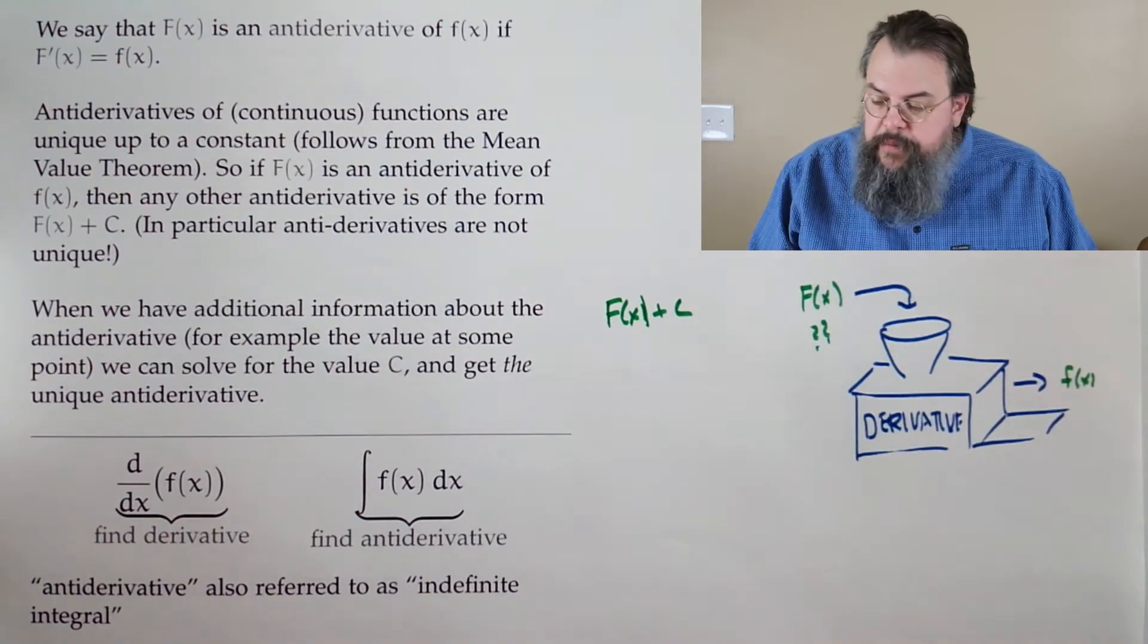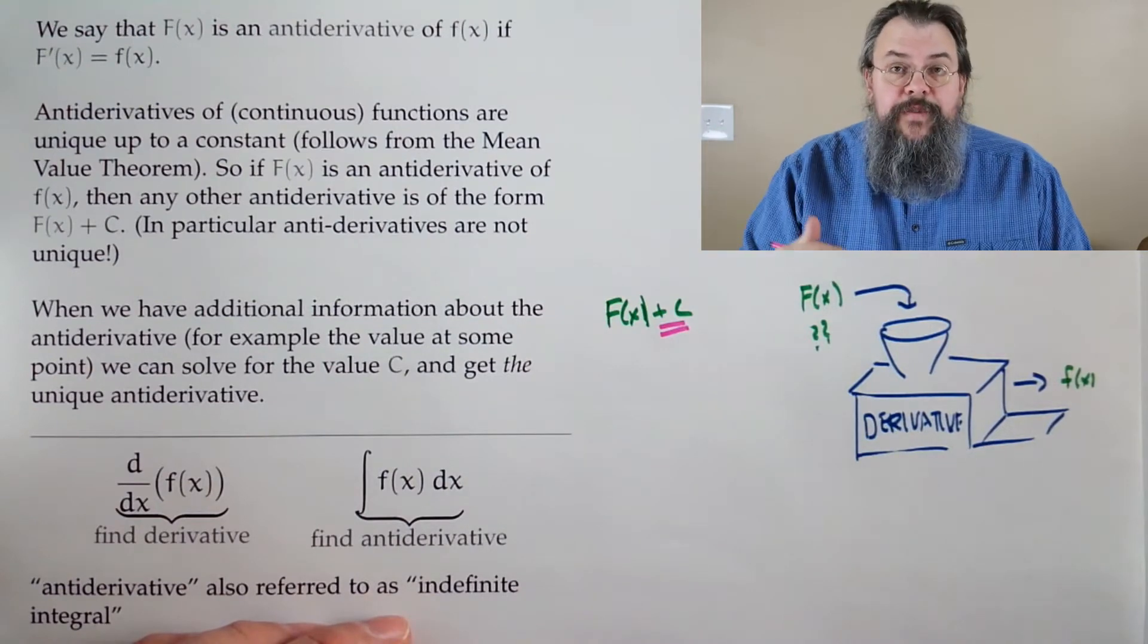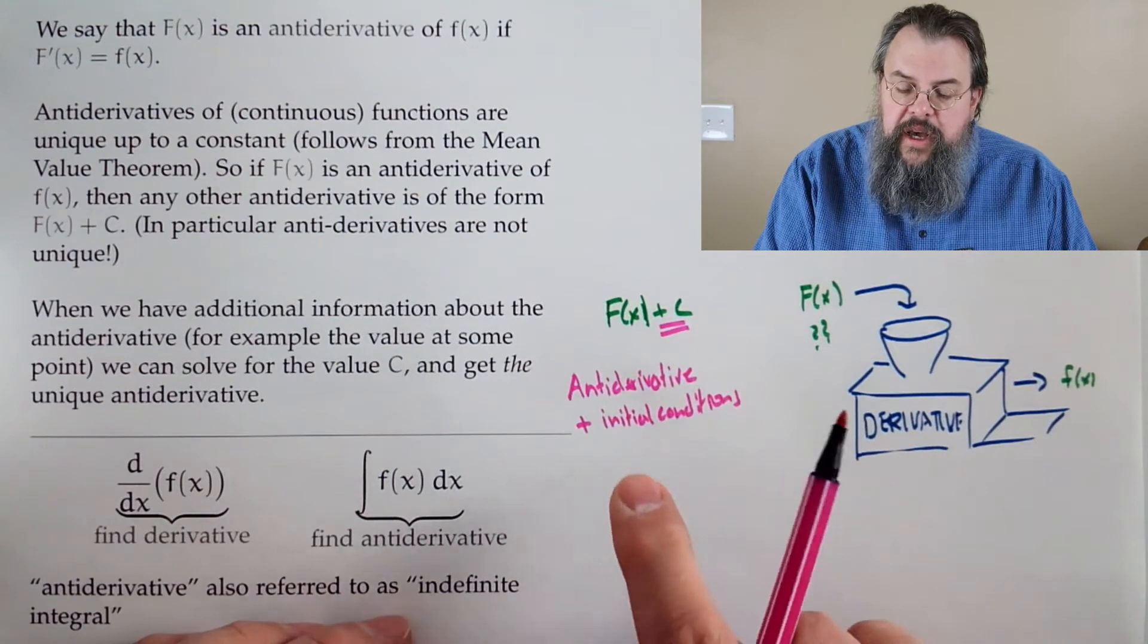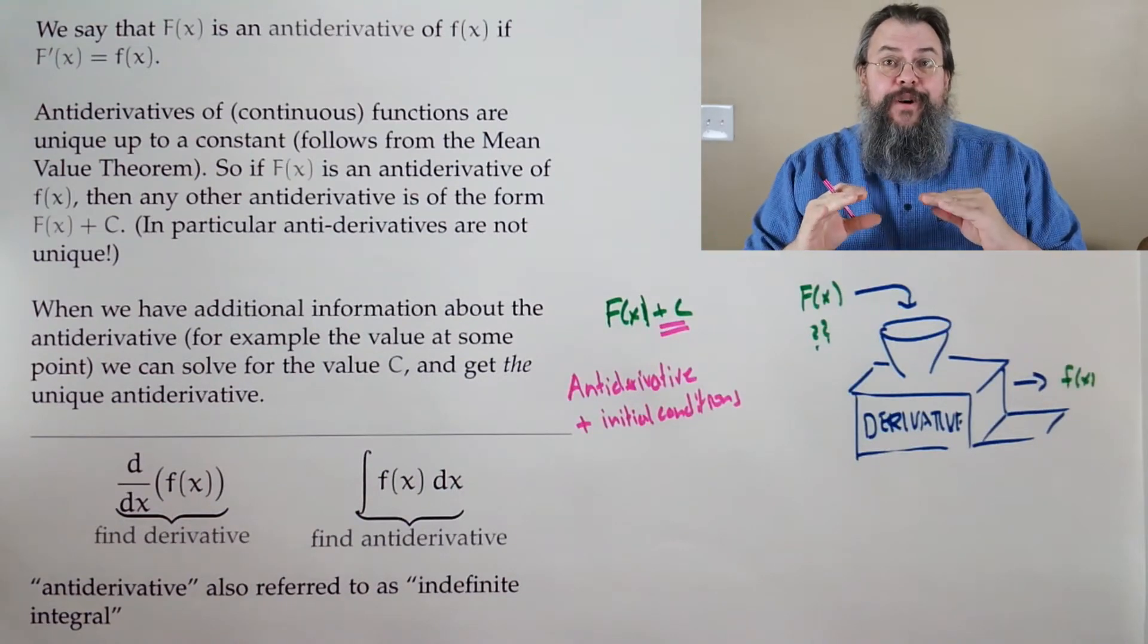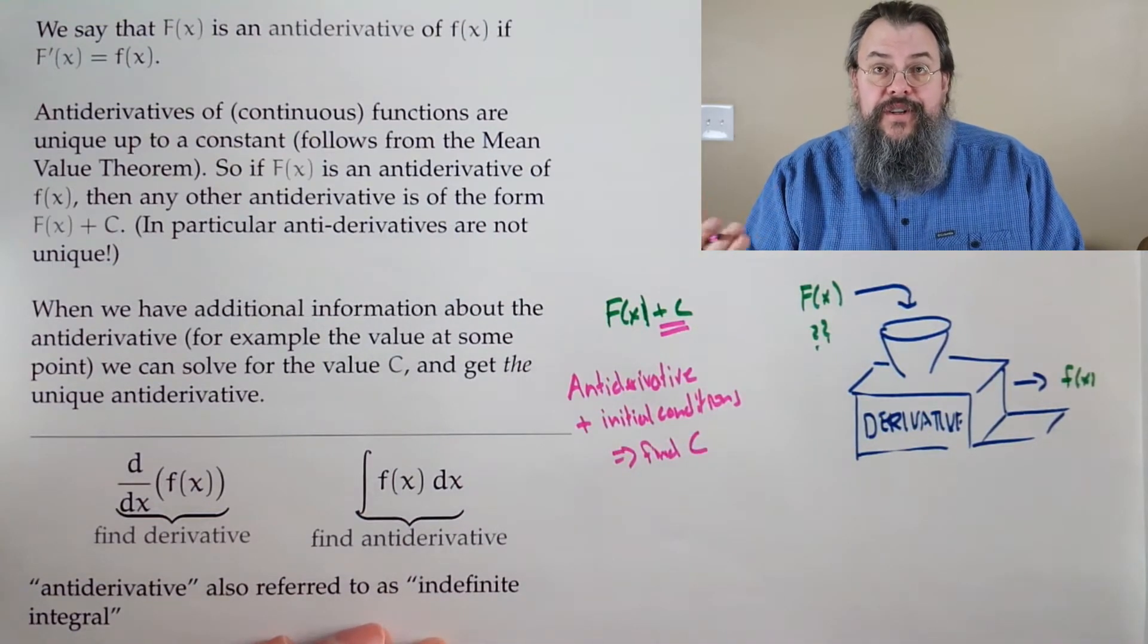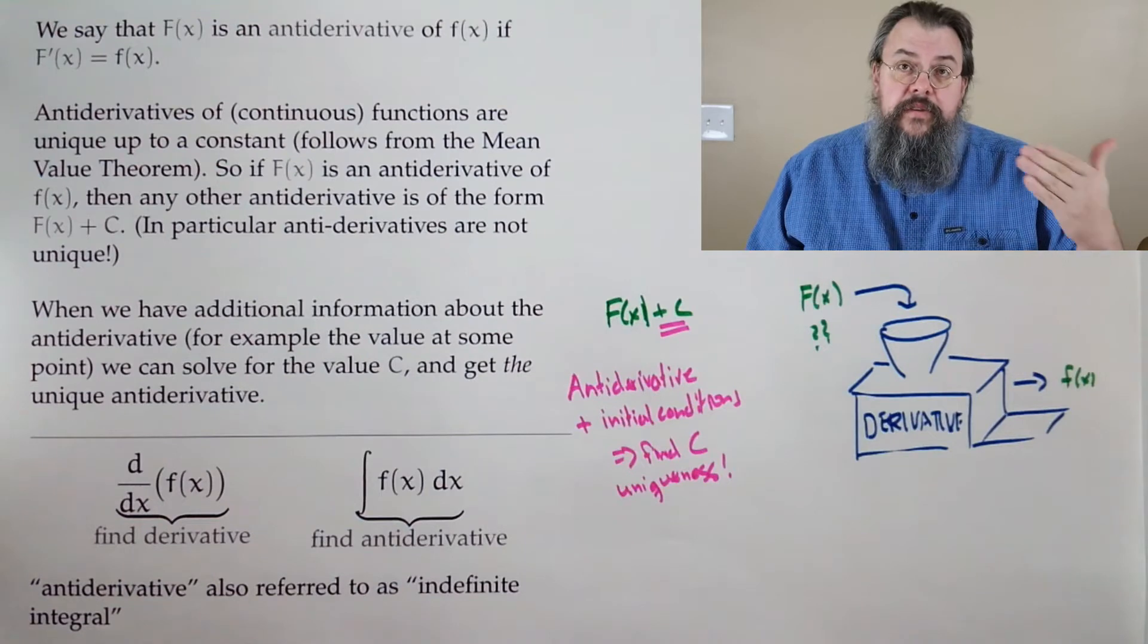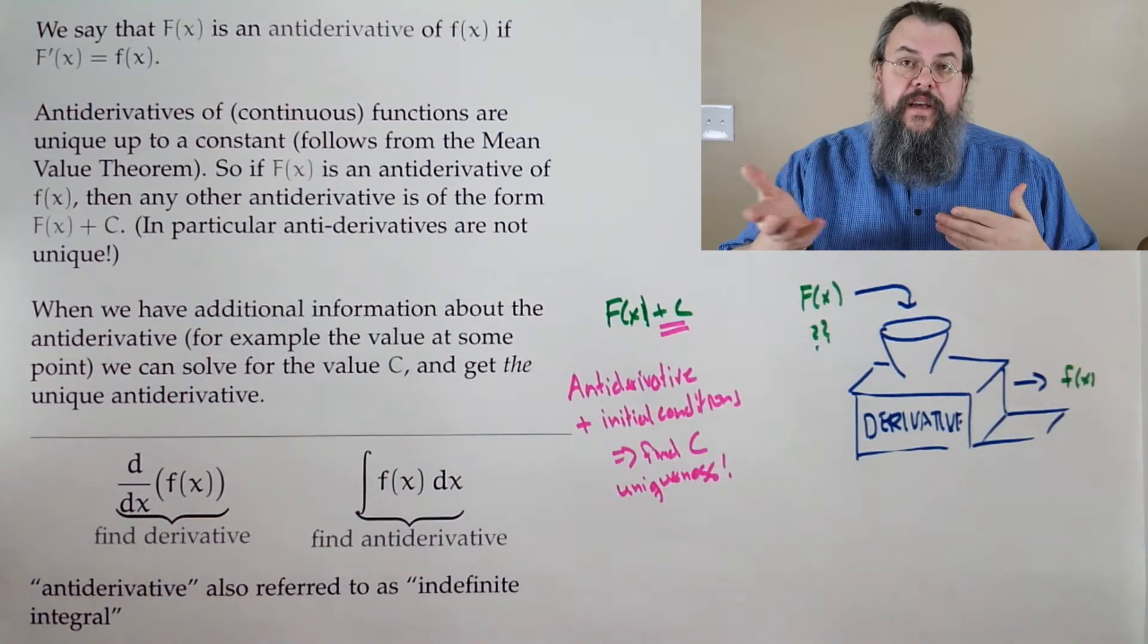Of course, when do we need our plus C? Well, we might be looking for something which is an antiderivative plus additional information, so we call these initial conditions. But really, it's just additional information. Then that says the initial conditions, that additional part says what is the plus C? This usually will find C, and then we have uniqueness. You might sometimes hear these called initial value problems.